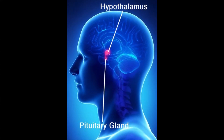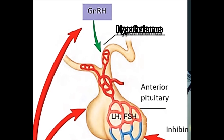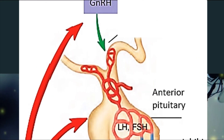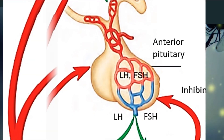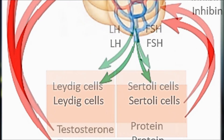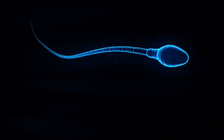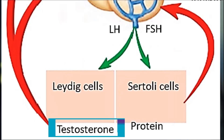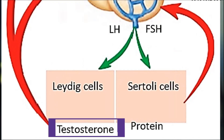Besides the testis, endocrine regulation in males involves the hypothalamus and the pituitary gland. The hypothalamus secretes gonadotropin-releasing hormone (GnRH), which regulates the anterior pituitary gland to release follicle-stimulating hormone (FSH) and luteinizing hormone (LH). LH stimulates the Leydig cells of the testis to produce testosterone, which is the principal male sex hormone. Testosterone stimulates spermatogenesis in adults, the development of primary sex organs before birth, and secondary sex characteristics at puberty.